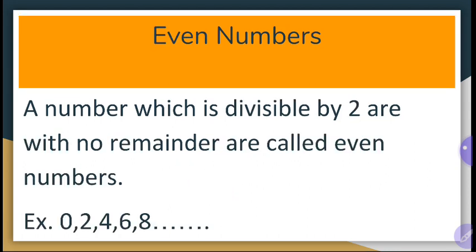Next is even numbers. A number which is divisible by 2 with no remainder is called an even number. For example, 0, 2, 4, 6, 8. These all numbers are divisible by 2.